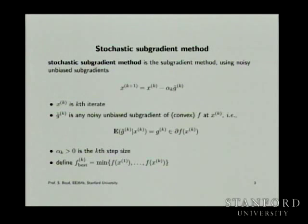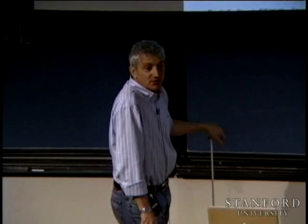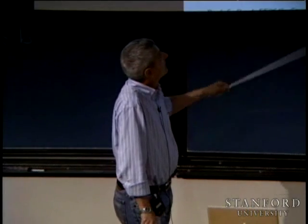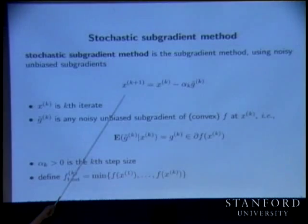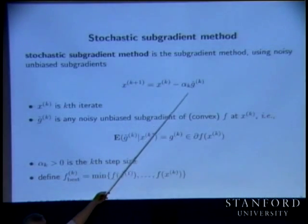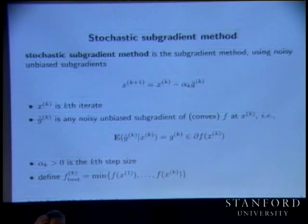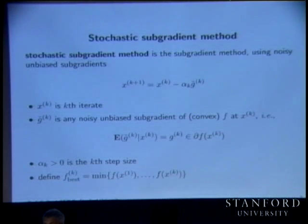I want to point out: this is now a stochastic process. Because even if x0 was deterministic, g0 is already a random variable. Therefore x1 is a random variable because it depends on g0. This thing is now a stochastic process — the trajectory of the stochastic subgradient method.